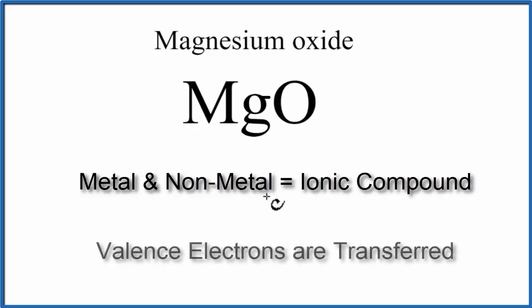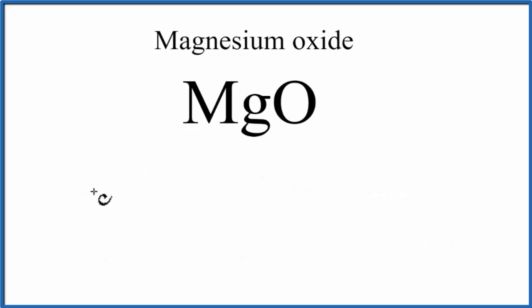So we need to think about the ions. We go to the periodic table, and we can see that Mg is in group 2, and has two valence electrons. So we'll write Mg, and put those two electrons next to it. Oxygen is in group 16, sometimes called 6A, it has six valence electrons.